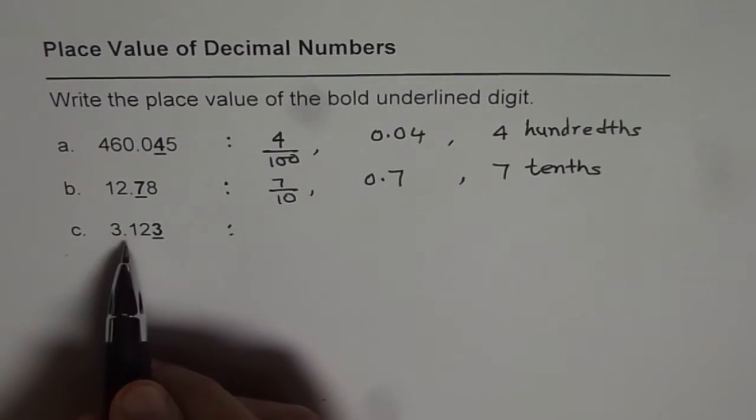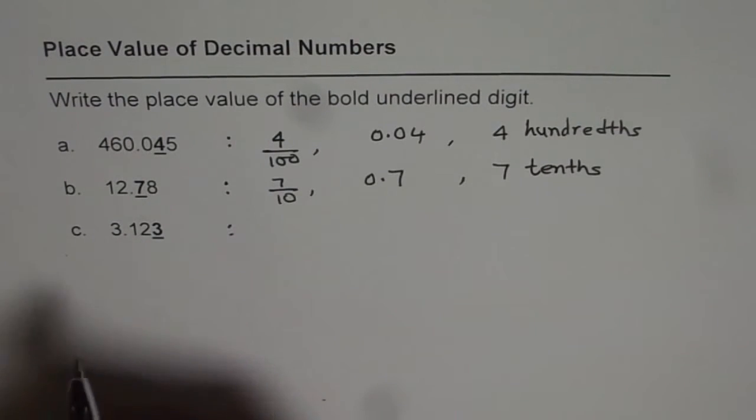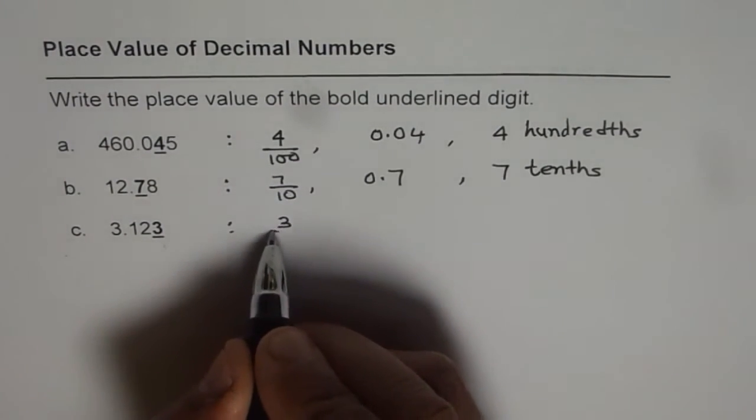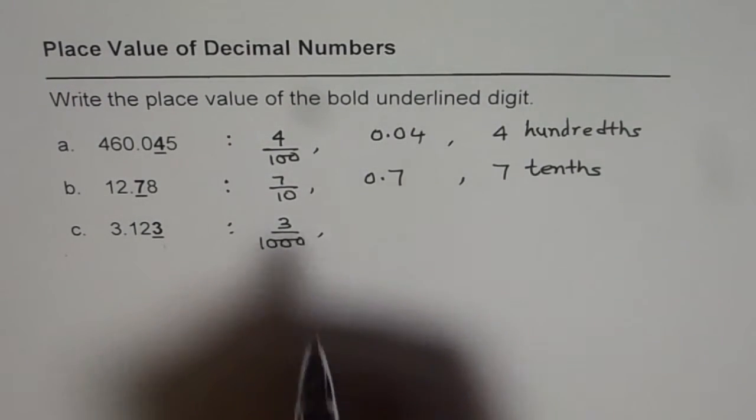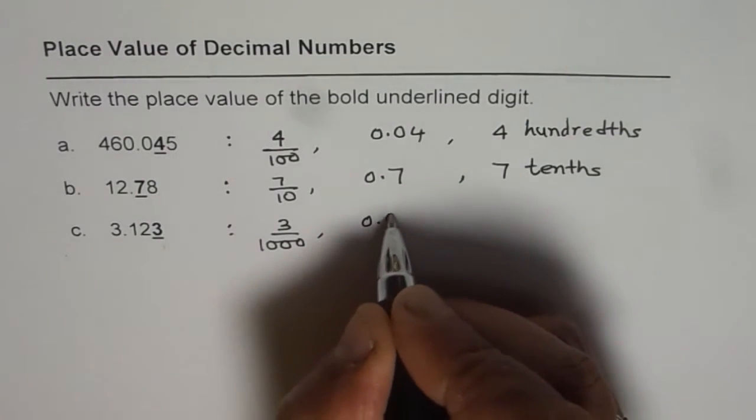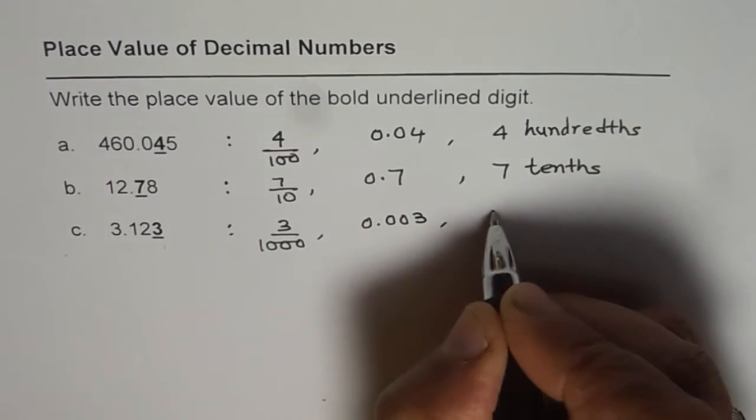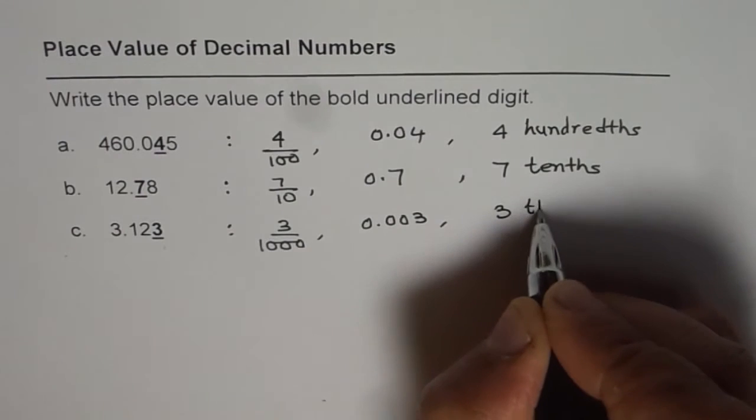3.123. So 3 underlined number is thousandths. That means it is 0.003 or it could be written as 3 thousandths.